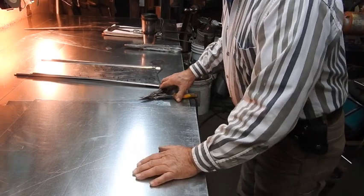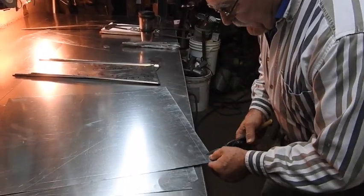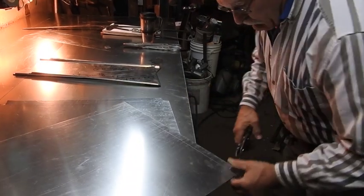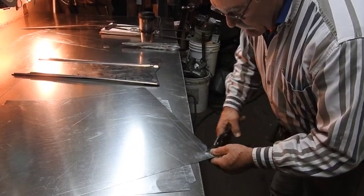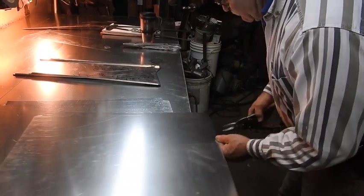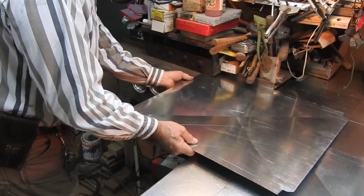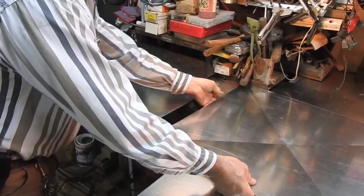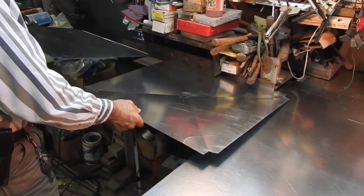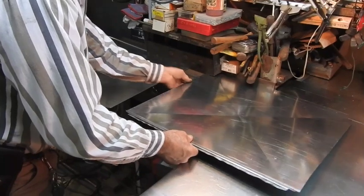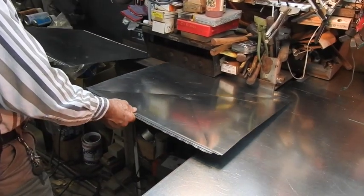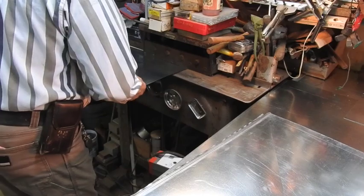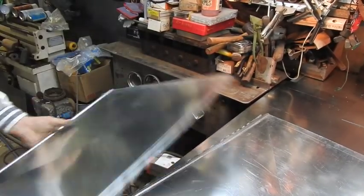We've got the top and the bottom rough cut laid out, 24 and 7 eighths and 24 and 3 eighths. It's now time to notch. Time to cross brake, then the lock farmer.